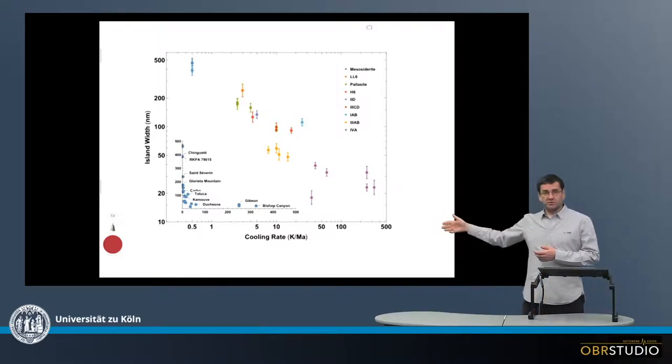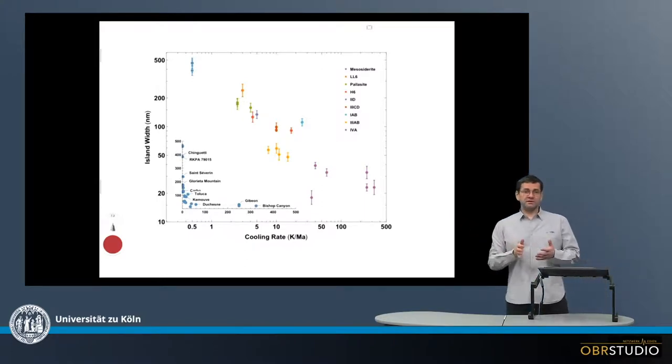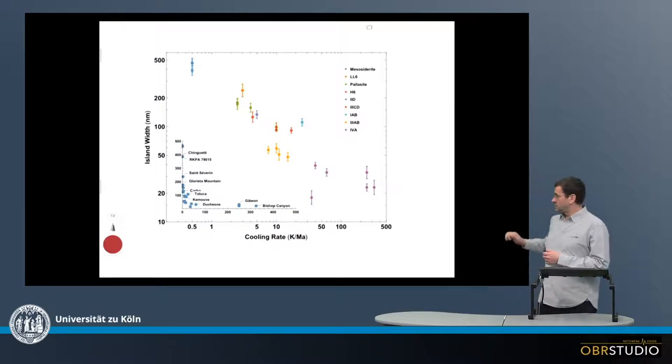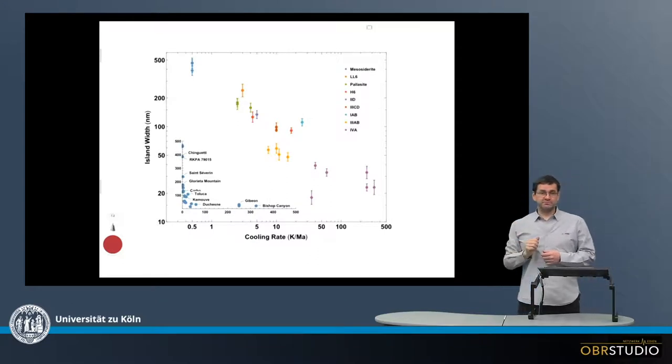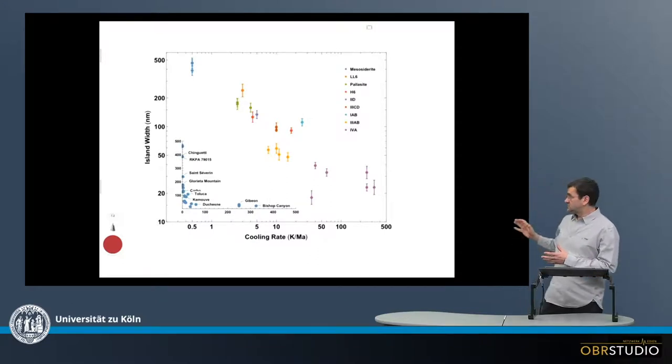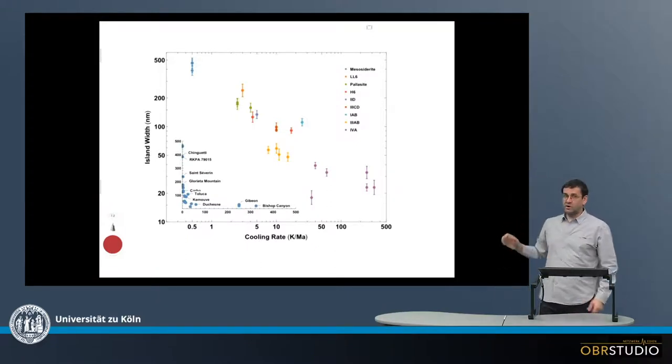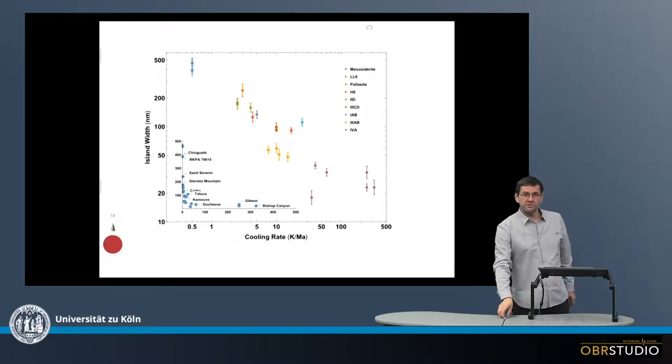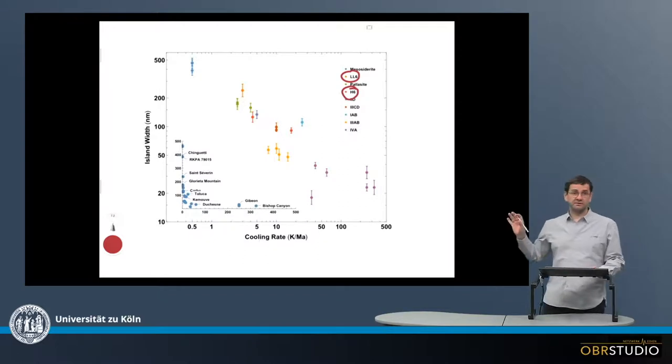The x-axis here, so the cooling rate, is actually a cooling rate that was determined with another method. And what is seen here is that there is a correlation between the island width and the cooling rate. So this means that this correlation can then also be used to determine the cooling rate of iron meteorites, but not only iron meteorites, but also of, for example, ordinary chondrites that contain some metal.